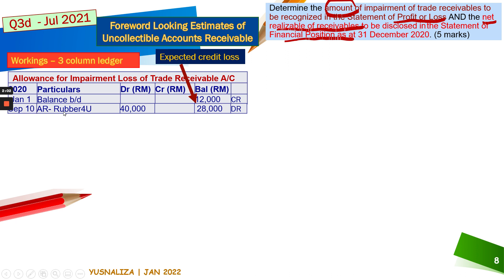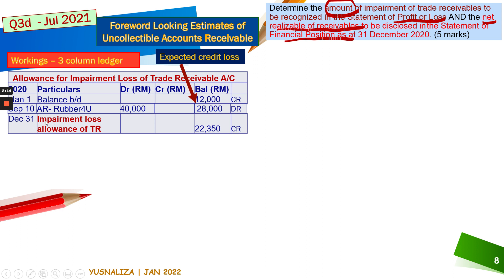Throughout the year, somewhere in September 10, another customer who is a rubber supplier has been declared bankrupt and therefore has been written off as bad debt. At the end of the year, using the expected credit loss method, we calculated the estimate of the credit loss to be 22,350, which will be included in the calculation of net realizable value of the receivable.